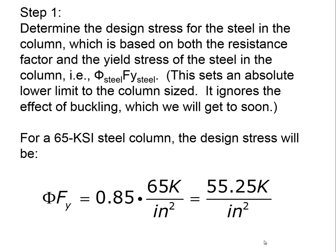What that's saying is we're going to downsize our expectations of what the column can do — or in other words, we're going to increase the size of the column and make it stronger because we don't have absolute confidence in the column. When I worked out this example, phi for a steel column was 0.85. That number has since been increased to 0.90, which is also the phi factor for a steel beam. They originally felt columns were less predictable than steel beams, but they've since changed their thinking and now both have the same resistance factor.